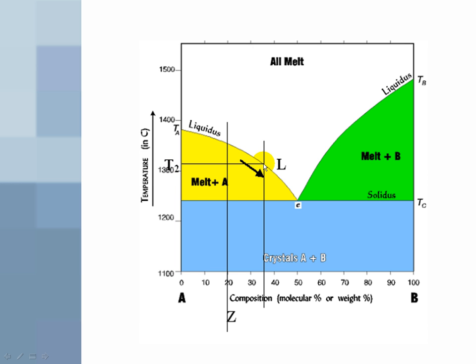To find the composition of the melt, remember the composition of the melt has changed. The reason it's changed is because now we've got a whole bunch of crystals of A. So we've pulled A out of this. Obviously, we've enriched the melt in B.